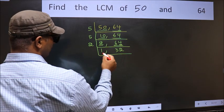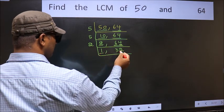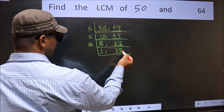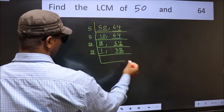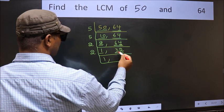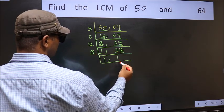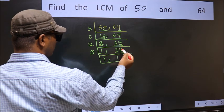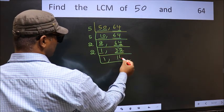Now we got 1 here, so focus on the next number 32. Last digit 2, even, so take 2. First number 3. A number close to 3 in the 2 table is 2 ones is 2. 3 minus 2 is 1. 1 carried forward gives 12. When do we get 12 in the 2 table? 2 sixes is 12.